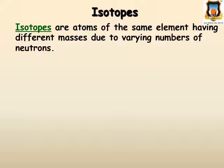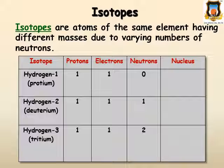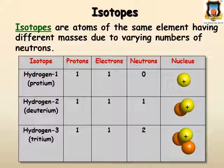Isotopes: Isotopes are atoms of the same element having different masses due to varying numbers of neutrons. Hydrogen has one proton, one electron and zero neutrons. Hydrogen-2, which is an isotope of hydrogen also known as deuterium, has one proton, one electron and one neutron. Hydrogen-3, that is tritium, has one proton, one electron and two neutrons.